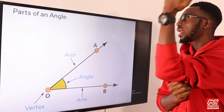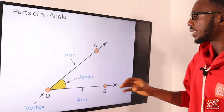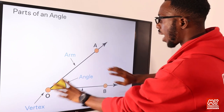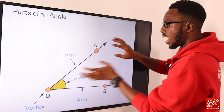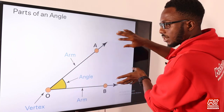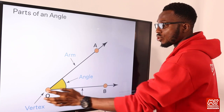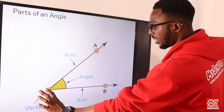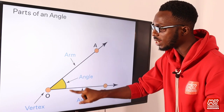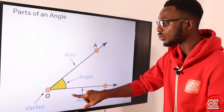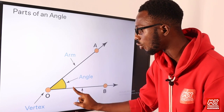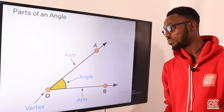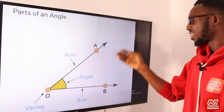What are the parts of an angle? We have the arm — we have two arms or two sides. You can refer to these as your lines. This is the point where they actually meet or the point where they diverge from. In between these two lines or two arms, an angle has been formed.